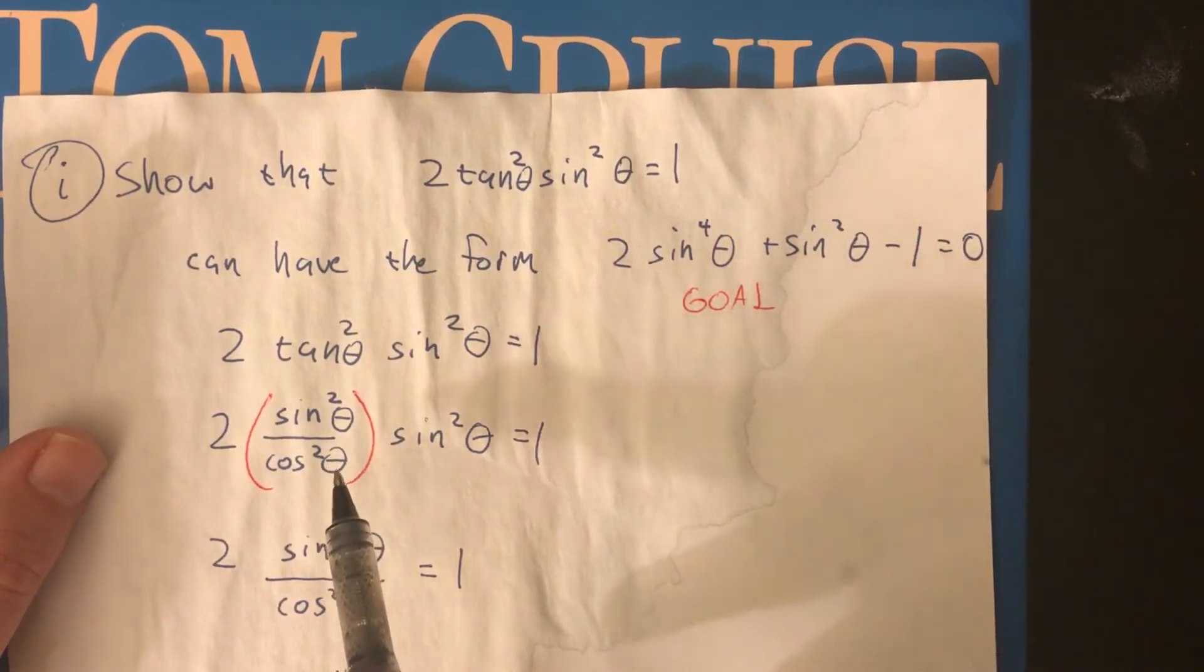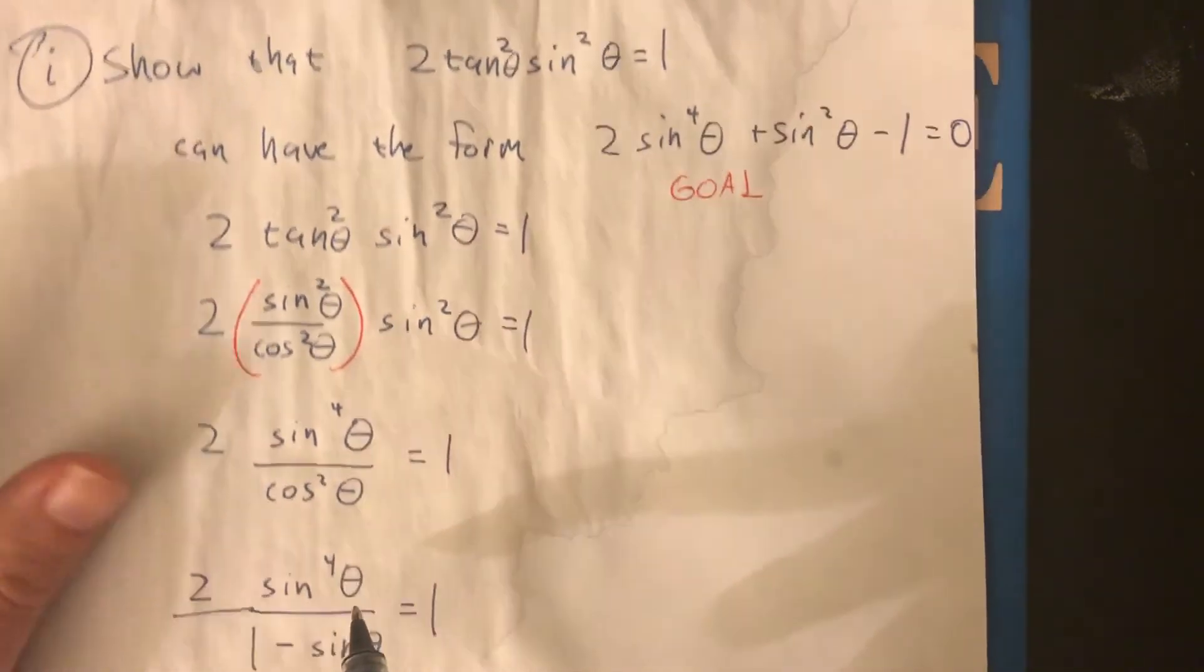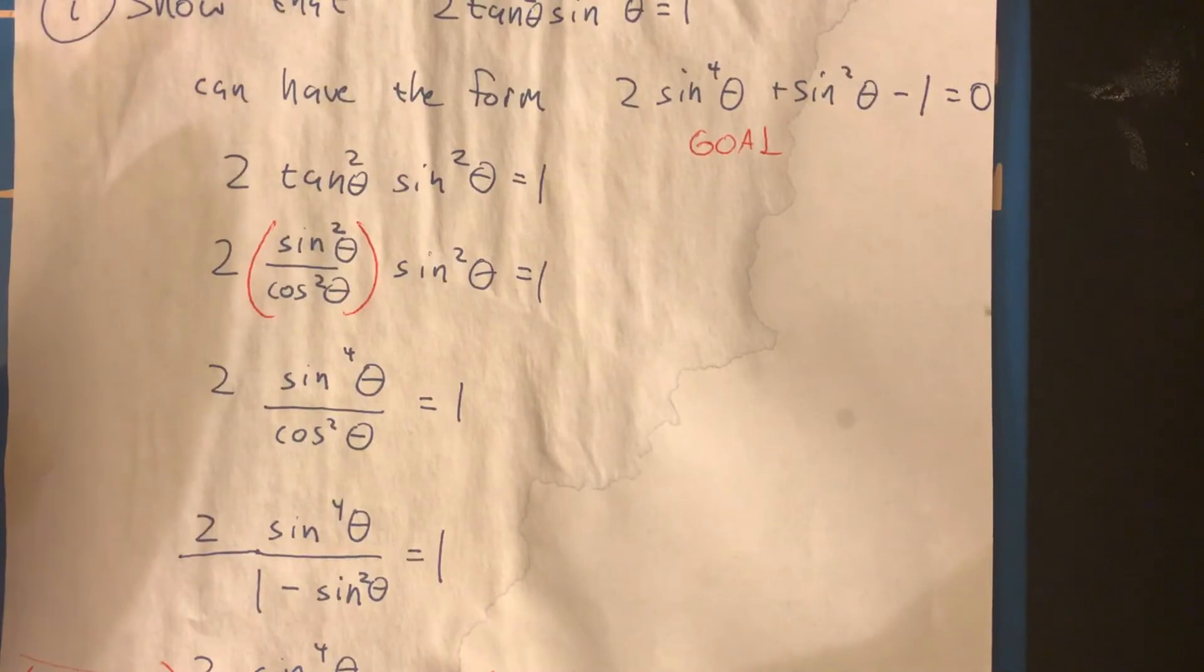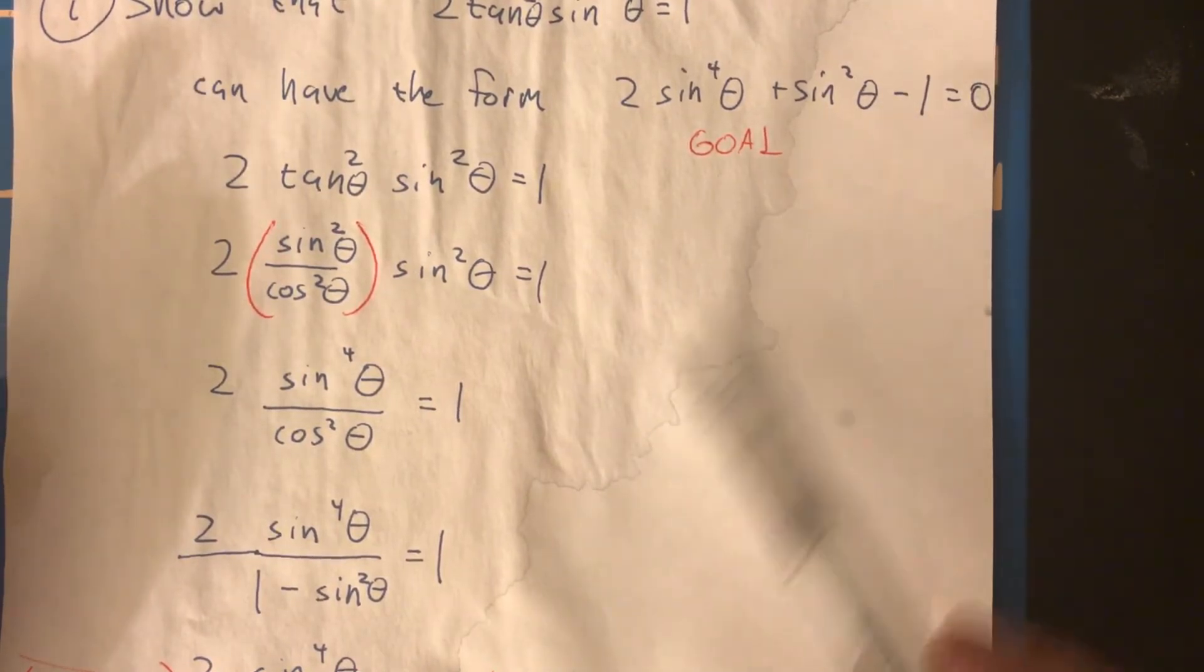time to go away, I'm going to switch you out for 1 minus sine squared. Why was I looking to do it? Because I wanted to only have sine in the problem, because that's what's going on in the goal.